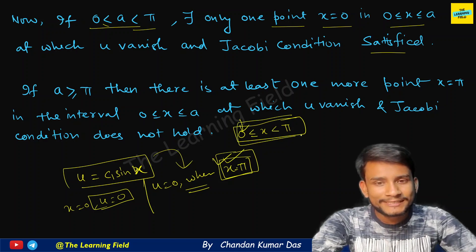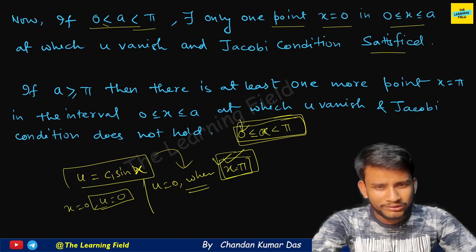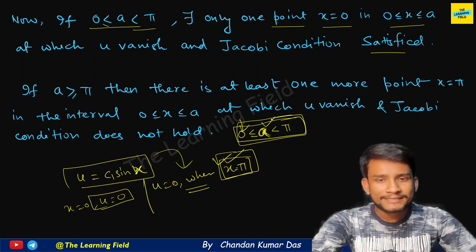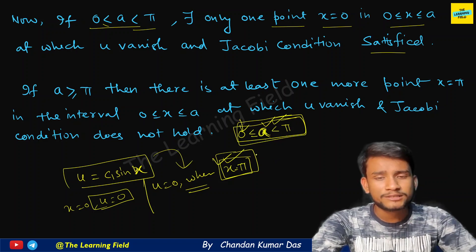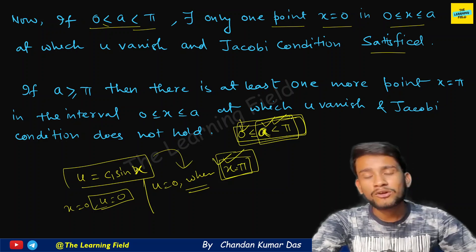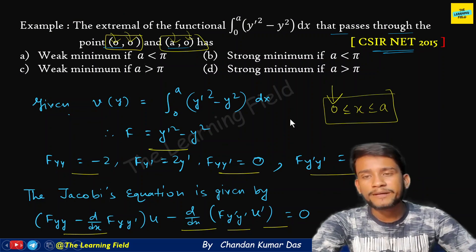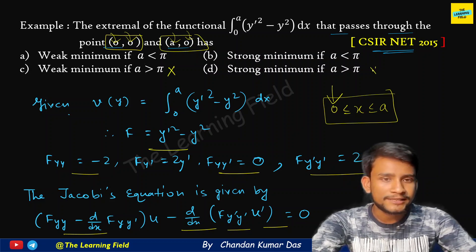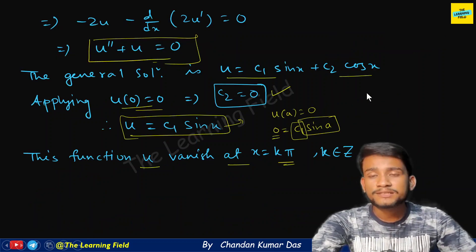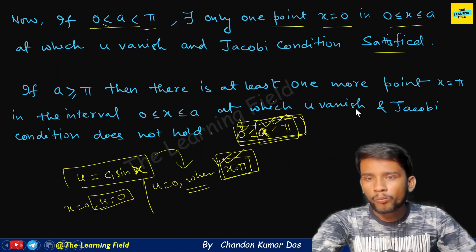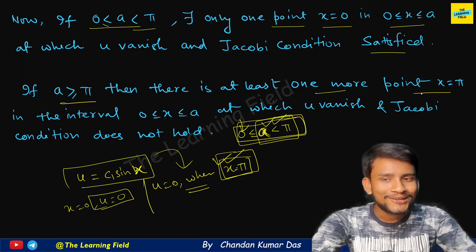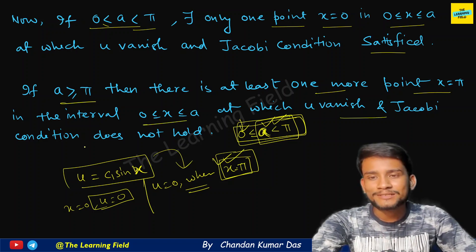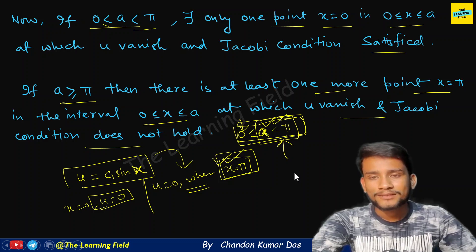In the interval 0 ≤ a < π, Jacobi's condition is satisfied. Since Jacobi's condition is a necessary condition for the existence of an extremum, if a ≥ π there is at least one more point x = π in the interval at which u vanishes, and Jacobi's condition does not hold. We can therefore discard any options with a ≥ π using Jacobi's condition.